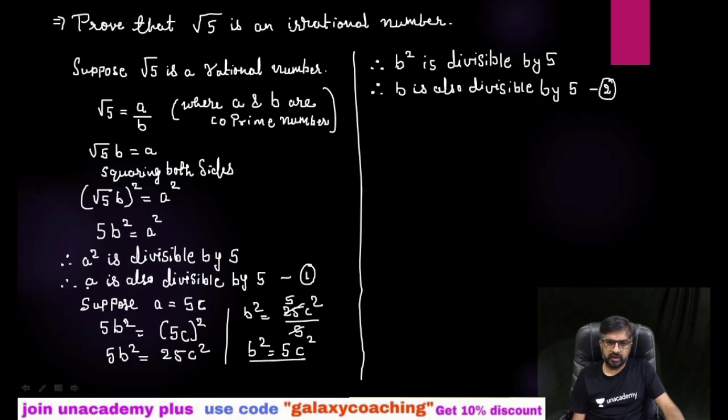You can see, result 1 is telling that a is divisible by 5. Result 2 is telling b is divisible by 5. So from 1 and 2, we can say that a and b is having common factor, is having common factor 5.